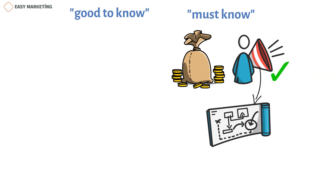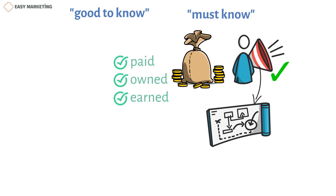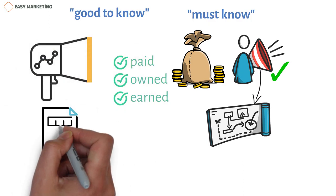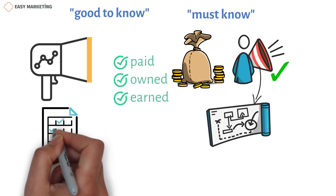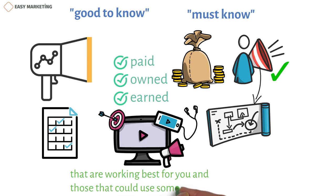In this post, we'll clarify the terms paid, owned, and earned media, as well as their distinctions and interrelationships. In this manner, you'll be able to evaluate your current marketing resources and assets, as well as identify future marketing chances for your company. Make sure to track the results of all your marketing initiatives so you can readily identify the media types that are working best for you and those that could use some improvement.